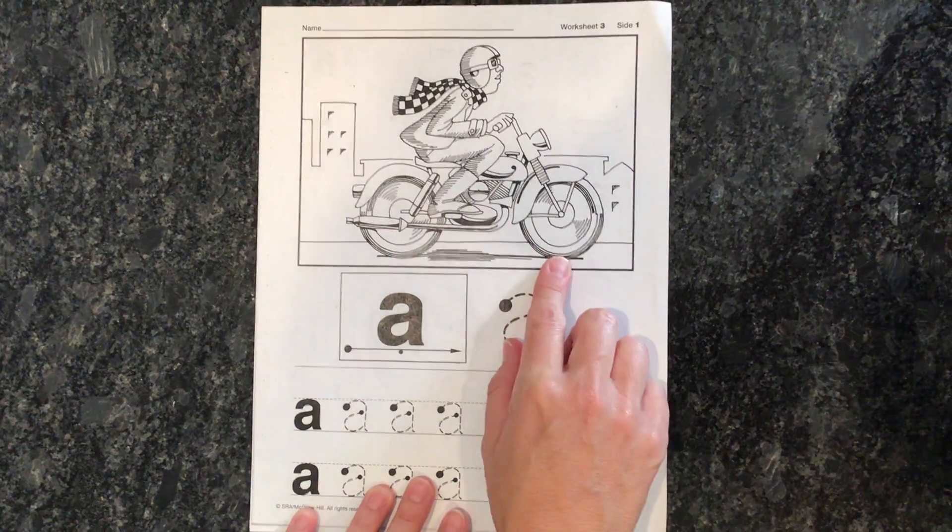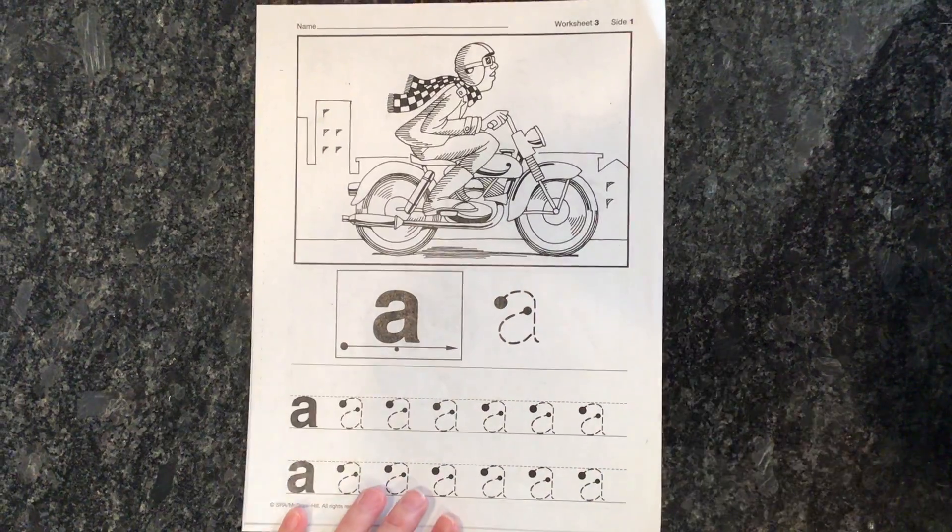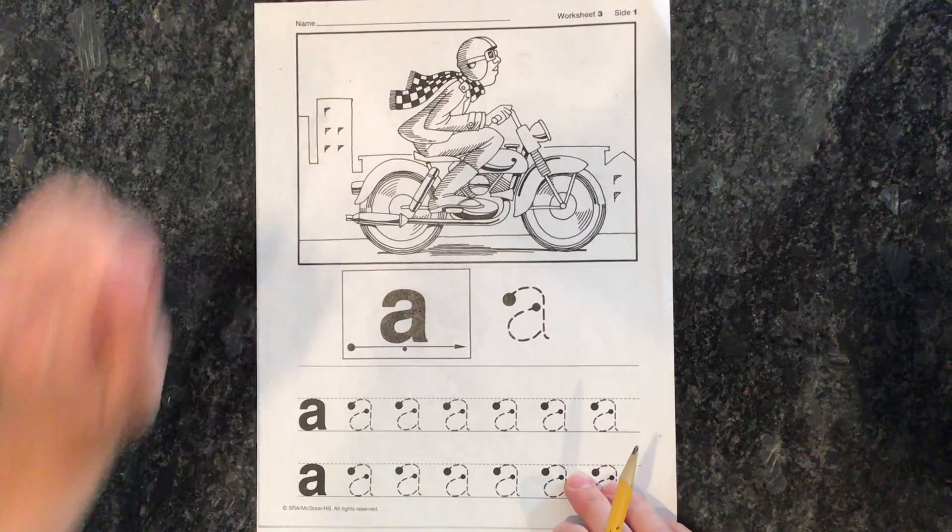So here's a man driving down the road on his motorcycle. All right, remember, you're going to write your name.